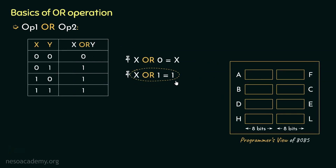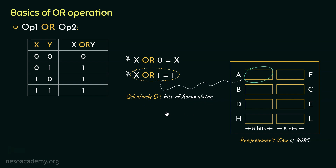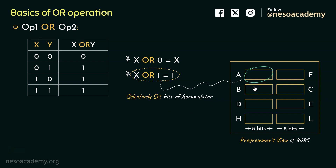Using this particular logic, we can selectively set bits of the accumulator. In the previous session, when we were applying AND logic, using X AND 0 we could selectively reset the bits in the accumulator. Whereas in case of OR, the logic X OR 1 — which always gives us 1 — using this we can selectively set the bits. For example, to set the most significant bit of the first operand, operand 2 will be chosen with the most significant bit as 1 and the rest as zeros, because we don't want to alter the remaining bits. After the operation, the result will be stored inside the accumulator.